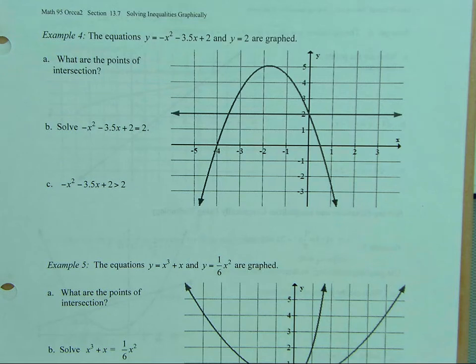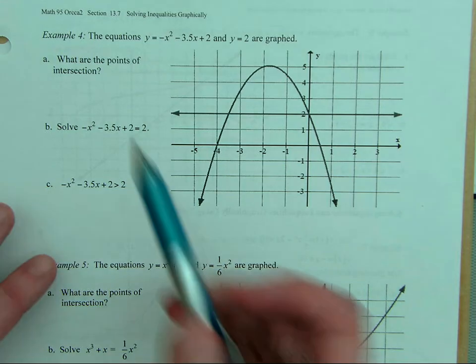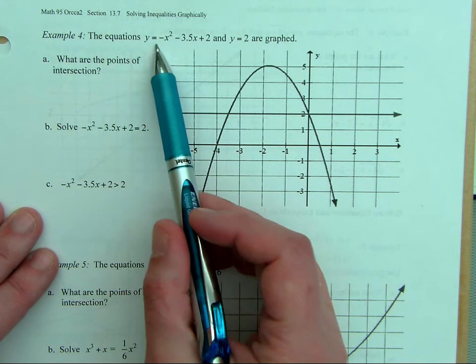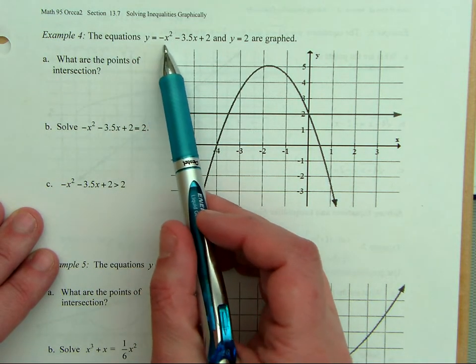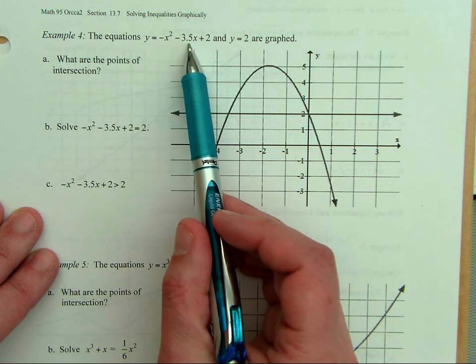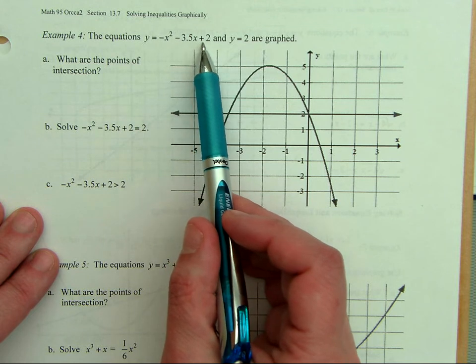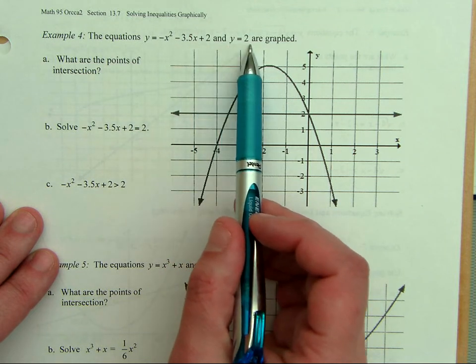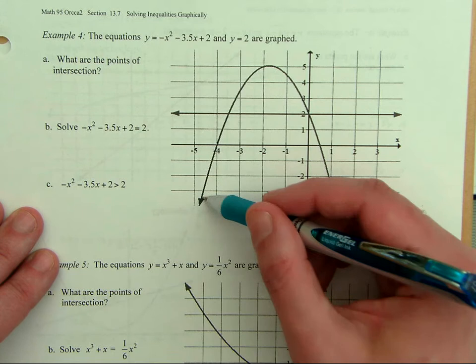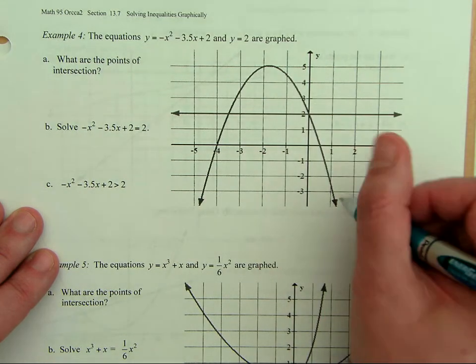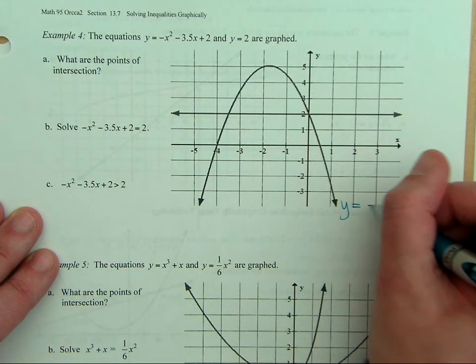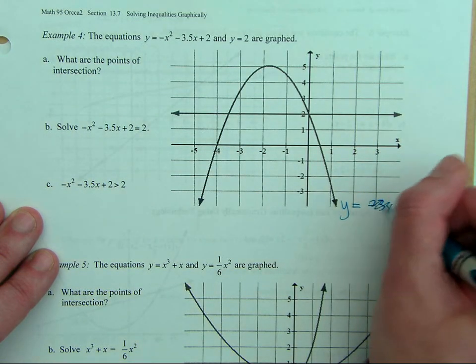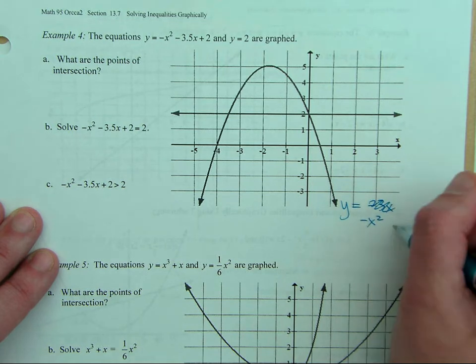So this is just coming from the graph. Of course you can also graph these on Desmos, but what we start with is graphing the equation y equals negative x squared minus 3.5x plus 2 and y equals 2. So here, this is the parabola.